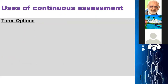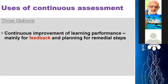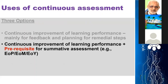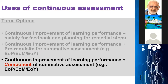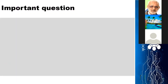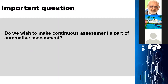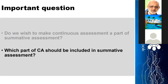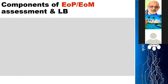The uses of continuous assessment — there are three options. Number one: continuous improvement of learning performance, mainly for feedback and planning for remedial steps. Number two: apart from continuous improvement, use it as a prerequisite for summative assessment — for example, end of posting, end of module, or end of year assessment. The third option: use it as a component of summative assessment in end of posting, end of module, or end of year assessment. However, there is an important question: do we wish to make continuous assessment a part of summative assessment, and if so, which part should be included?